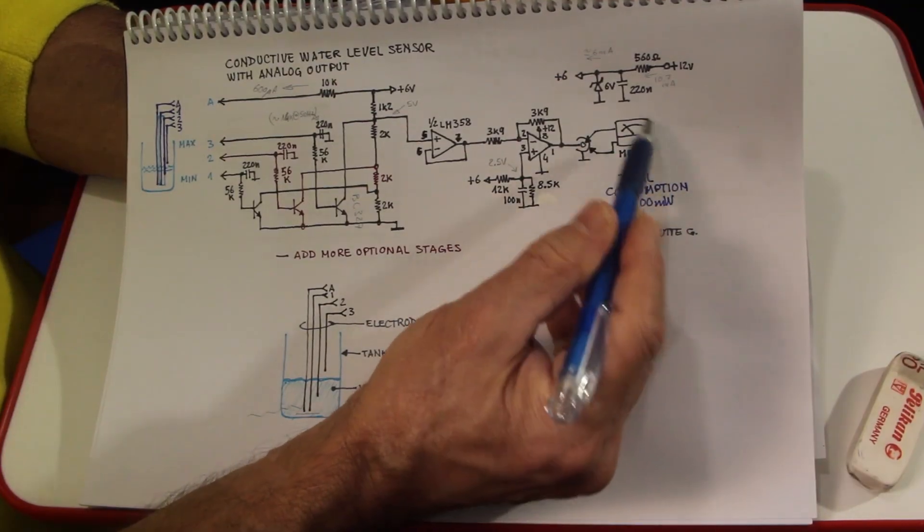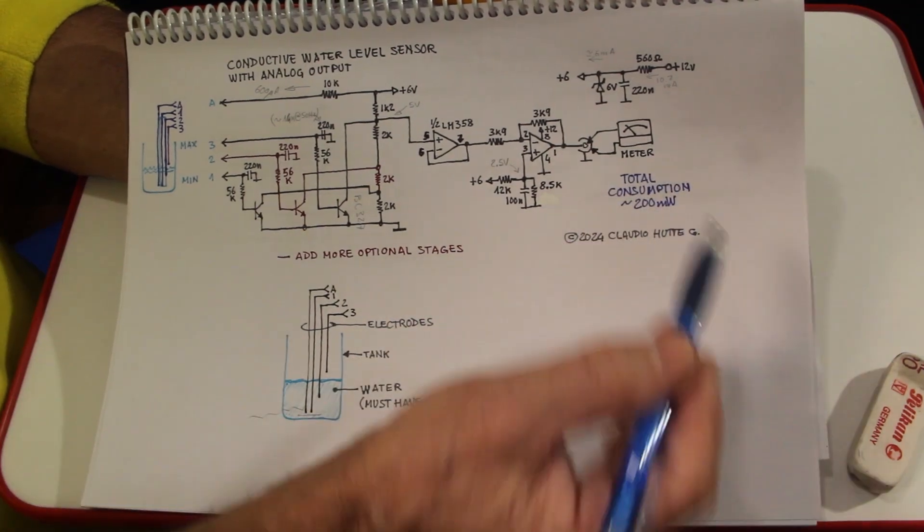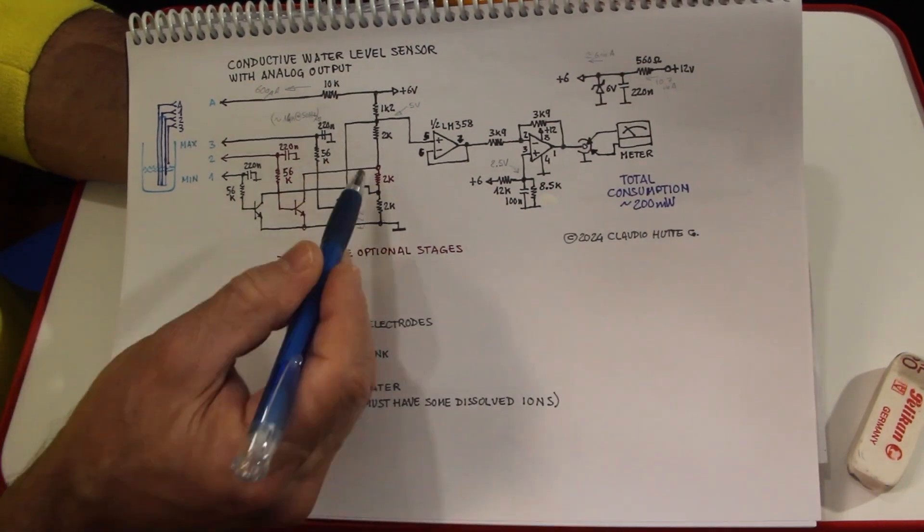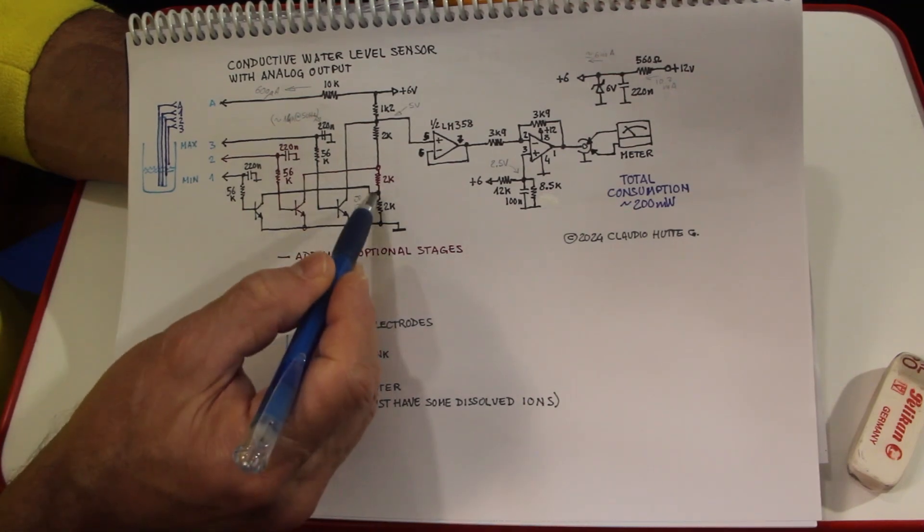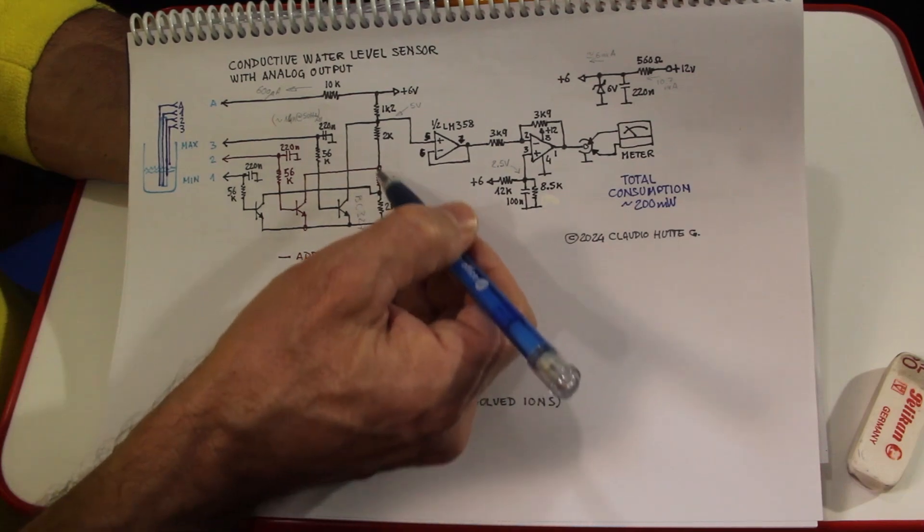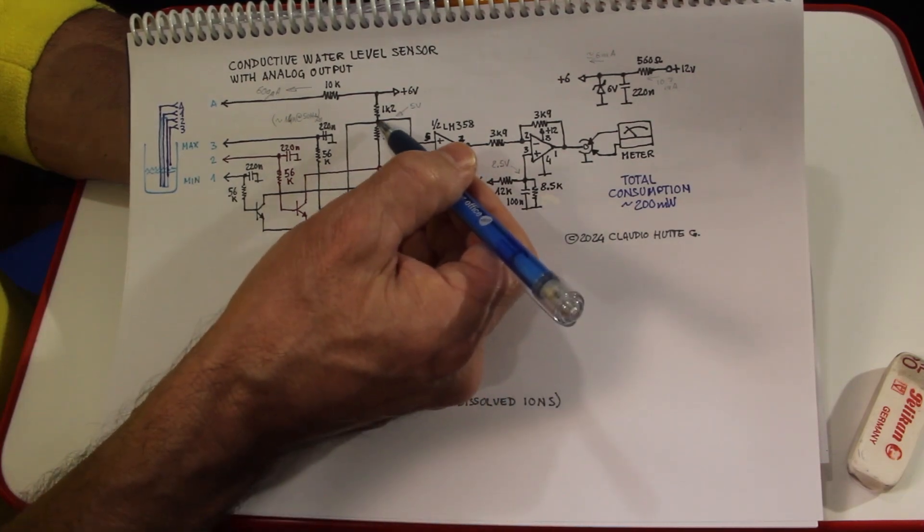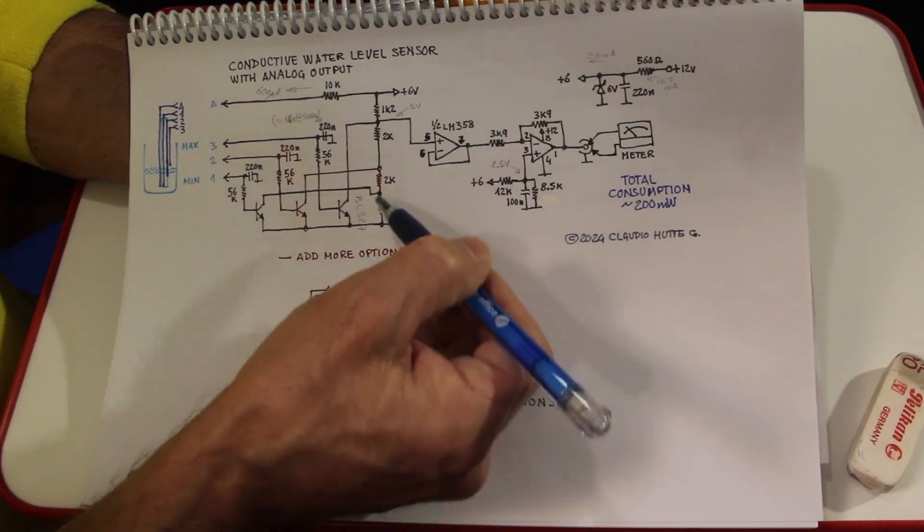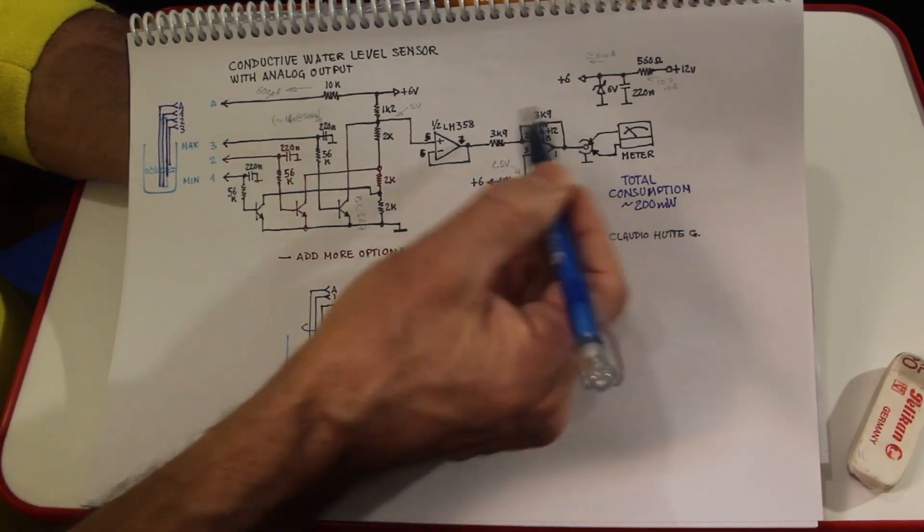When this is open, but this is closed, or this is closed, we have intermediate values here. When the level rises, we have a voltage that goes down and down towards 0, and here it is inverted, and therefore goes from 0 toward 5V.